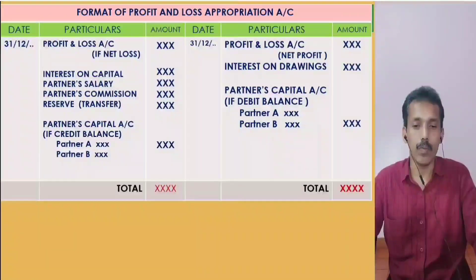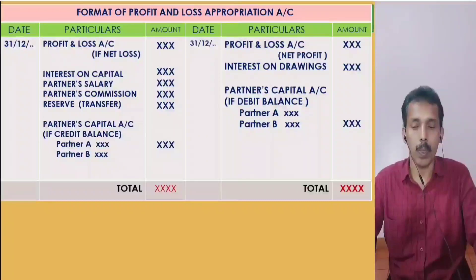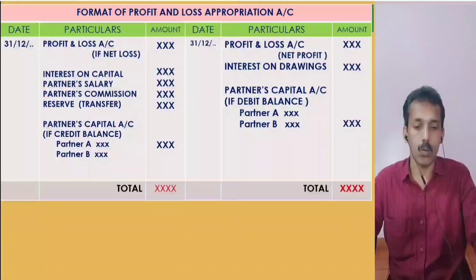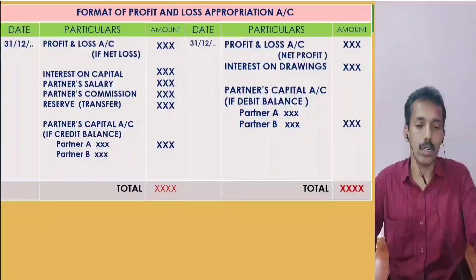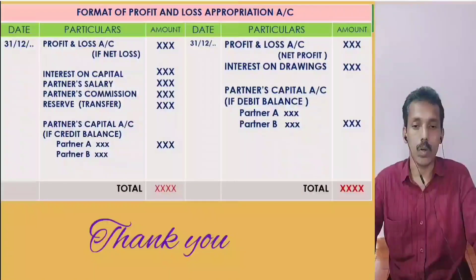The closing balance of this account — if credit balance — represents the share of profit for each partner; if debit balance, it represents the share of loss. The total amounts are then transferred to each partner's capital account accordingly.